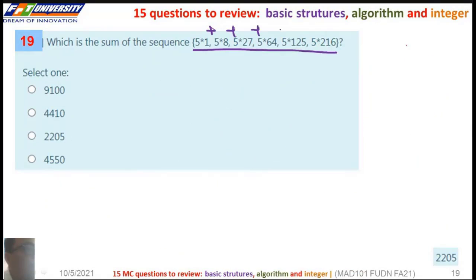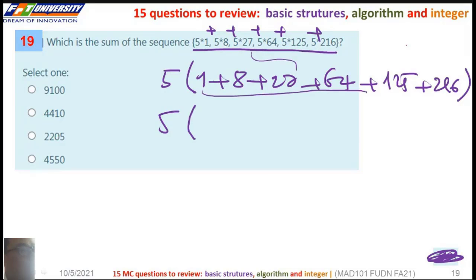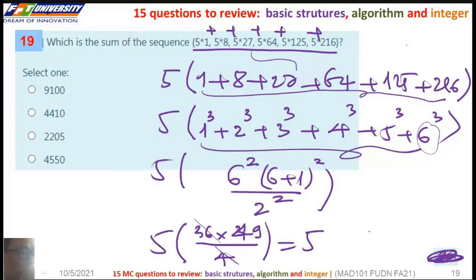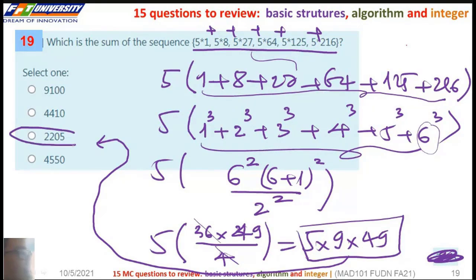What is the summation? We have here 5 + 1 + 8 plus the summation of cubes. Because n is 6, so it is 6(6+1)/2 and this is squared. So we have here, this is the correct answer.